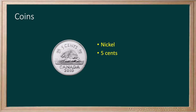It can be written using the cent sign that comes after the number. It can also be written with the dollar sign. It is less than a dollar, so a zero is placed in front of the decimal.